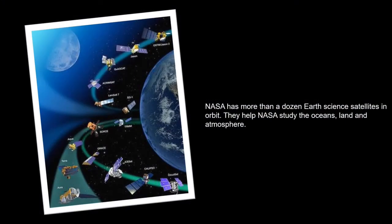NASA has more than a dozen Earth science satellites in orbit. They help NASA study the oceans, land, and atmosphere.